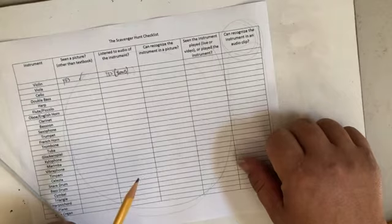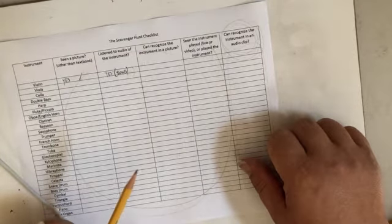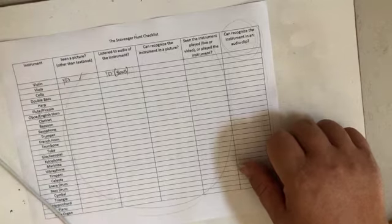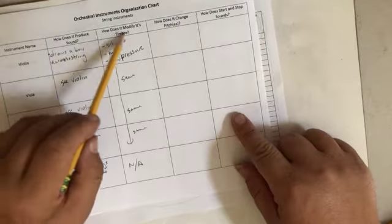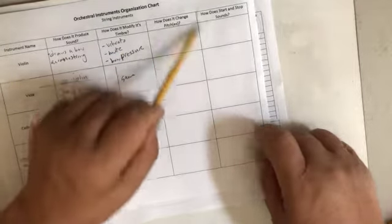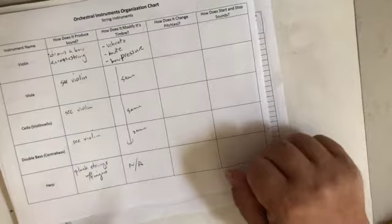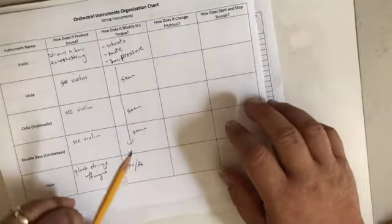And then you will take a picture of that and upload it next week. I hope that makes things clearer for you. Again, this is going section by section of your textbook and summarizing the information on how things make sound, how they modify the color or timbre of the sound, how does it change or regulate the pitch, and how does it start and stop? It's right in the textbook and you're summarizing it, making a study guide. That's what you take a picture of.